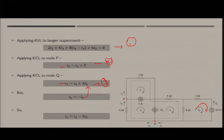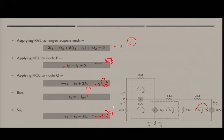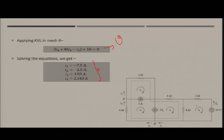Applying KVL to the remaining loop gives equation 4. Solving equations 1, 2, 3a, and 4 simultaneously yields the values of i1, i2, i3, and i4. With this, we close today's lecture on mesh analysis; in the next lecture we will start nodal analysis.